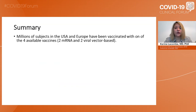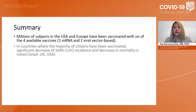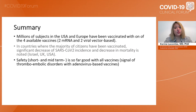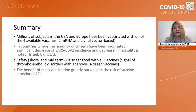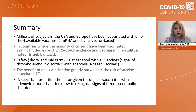To summarize: millions of subjects in the USA and Europe have been vaccinated with the four available vaccines — two messenger RNA and two viral vector-based vaccines. In countries where the majority of citizens have been vaccinated, a significant decrease in SARS-CoV-2 incidence and mortality has been noted, as in Israel, the UK, and the USA. The safety, short and mid-term, is so far very good with all vaccines, but there is a signal of thromboembolic disorders with adenovirus-based vaccines. The benefits of mass vaccination right now greatly outweigh the risk of vaccine-associated adverse events, and specific information should be given to subjects vaccinated with adenovirus-based vaccines.